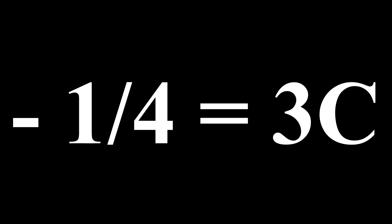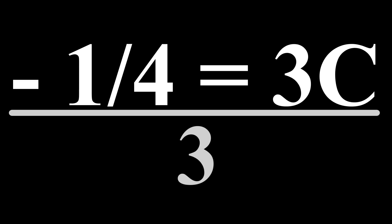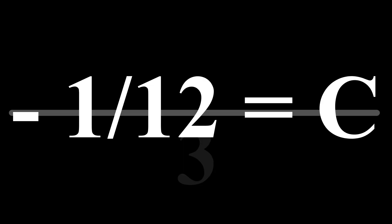If we put this all into an equation, we find that negative S2 is equal to 3C. We can substitute one-fourth for S2, and then divide the equation by 3. Now we have our final sum. C is equal to negative one-twelfth.